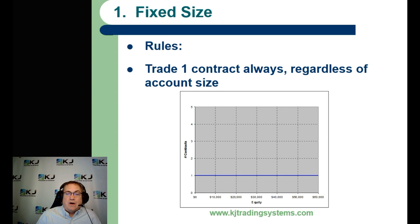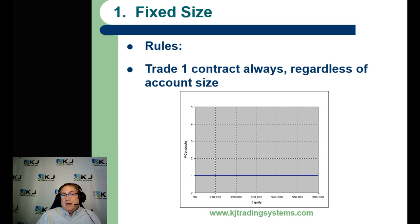Starting with fixed size, number one: you're just going to trade one contract regardless of how big your account gets. As your account grows, your position size doesn't change, and therefore your risk per trade actually goes down. Some people do this — just trade one and let it go. It doesn't take advantage of any compounding, but this is a good baseline that everybody understands.